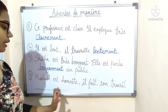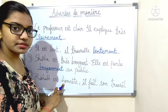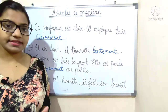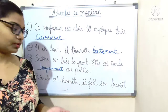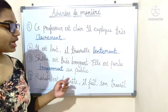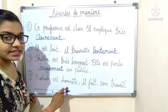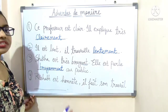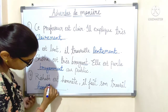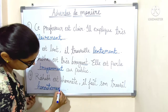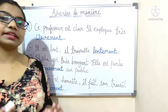Number four: 'Robert est honnête, il fait son travail honnêtement.' 'Honnête' ends with the vowel E, so we directly add '-ment': H-O-N-Ê-T-E-M-E-N-T — 'honnêtement'. Robert is honest and he does his work honestly.